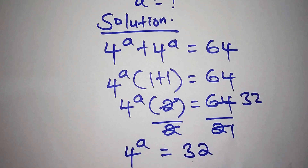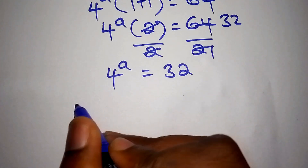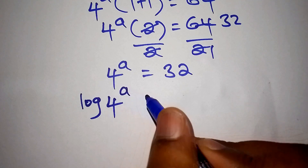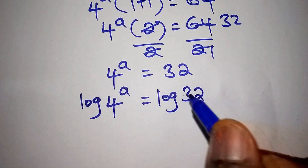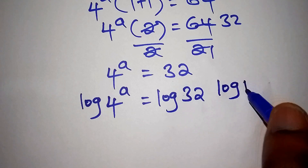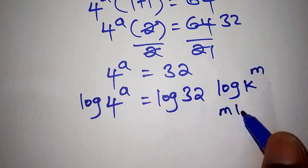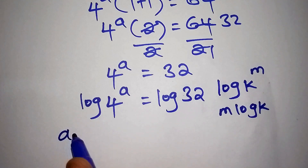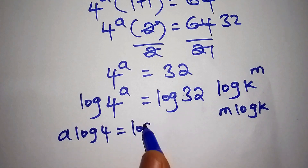To solve the value for a using the appropriate method, we shall introduce the log on both sides. So we shall have the log of 4 to the power of a is equals to the log of 32. According to the law of logarithm, when you have the log of k to the power of m, this can be written as m times the log of k. So the log of 4 to the power of a can be written as a times the log of 4, equals to the log of 32.